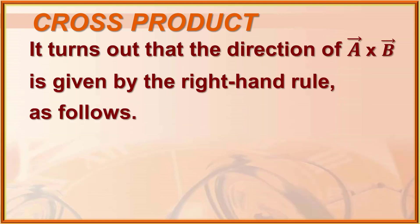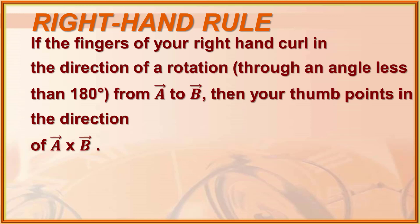The direction of vector a cross b is given by the right-hand rule. We follow this rule to find the direction of the resultant. If the fingers of your right hand curl in the direction of rotation through an angle less than 180 degrees from vector a to vector b, then your erect thumb points in the direction of a cross b. This is also called the screw rule.